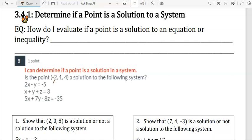Let's plug those in. 2 times negative 2 minus 1 equals negative 5. Okay, so that one's true.